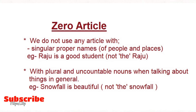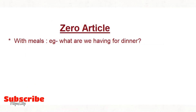The second rule: we use zero article with plural and uncountable nouns when talking about things in general. For example, 'Snowfall is beautiful.' Snowfall is an uncountable noun, so we won't use any article in front of it. It is wrong to say 'The snowfall is beautiful.' When talking about things in general, we use no article.